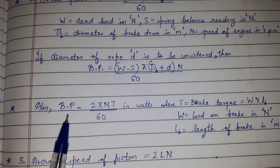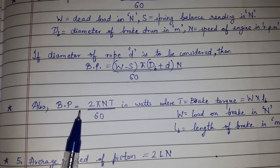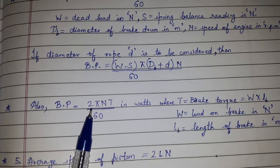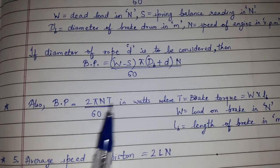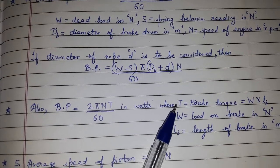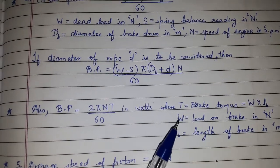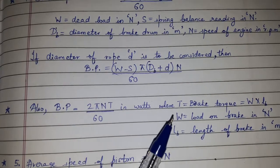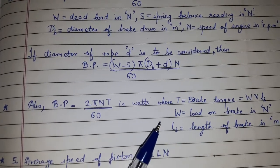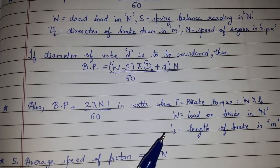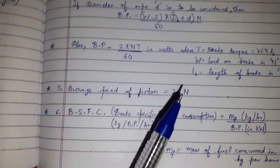Also, there is another formula for calculating brake power, i.e. BP which is equal to 2π N T / 60 where T is the brake torque which is equal to W × Lb where capital W is equal to load on brake in Newton and Lb is the length of brake in meter.